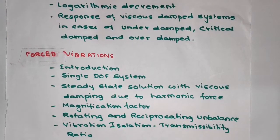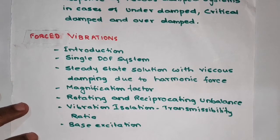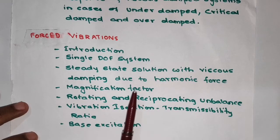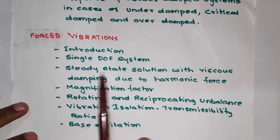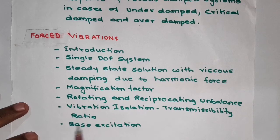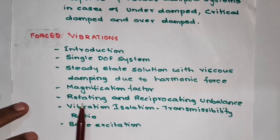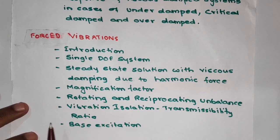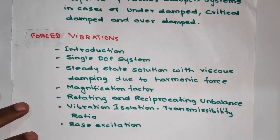In the fourth chapter, we will be seeing forced vibrations — what is forced vibration, the single degree of freedom system for forced vibration, and the steady state solution with viscous damping due to a harmonic force. We will also see the magnification factor, unbalancing of rotating and reciprocating components, vibration isolation, transmissivity ratio, and vibration transmissibility due to base excitation.